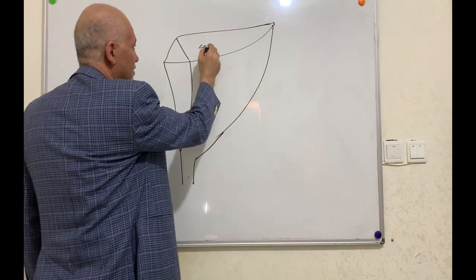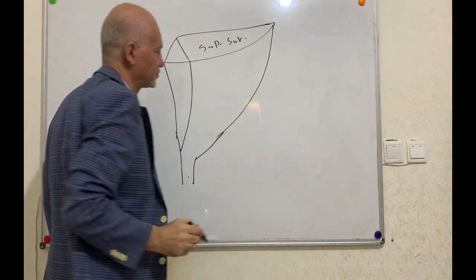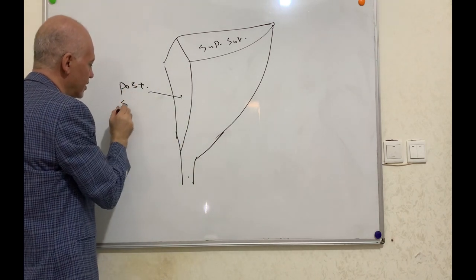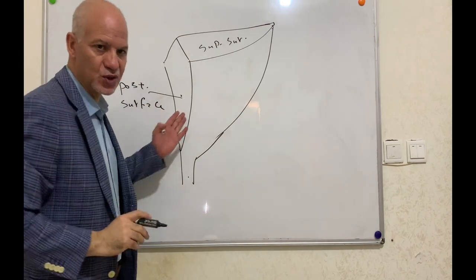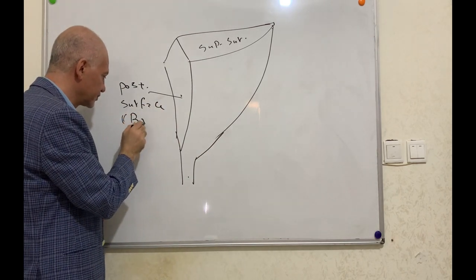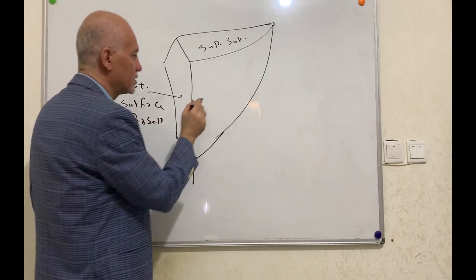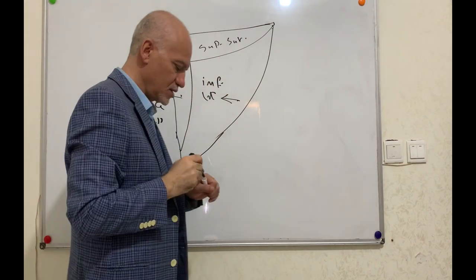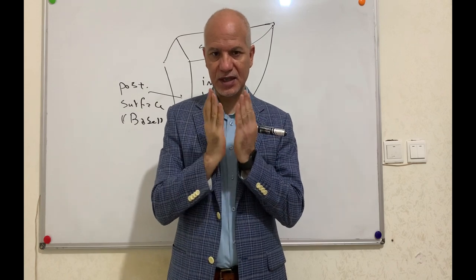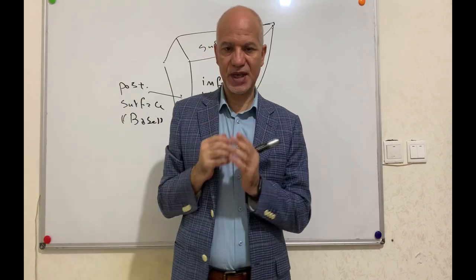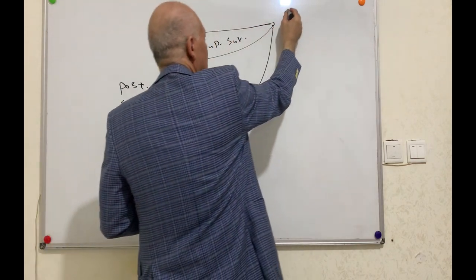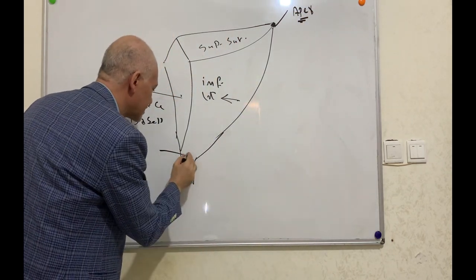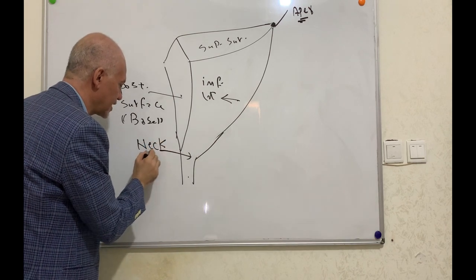The urinary bladder has a superior surface, a posterior surface (also called the base), and two inferolateral surfaces — right and left. There is also the neck of the urinary bladder, which continues with the urethra.